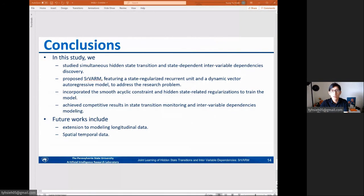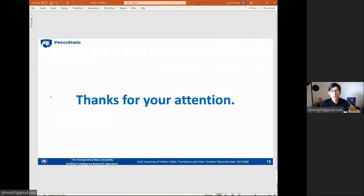To conclude today's presentation, we studied simultaneous hidden state transition and state-dependent intervariable discovery problem, and proposed the SRVARM approach, which features a state-regularized recurrent unit and a dynamic autoregressive model. Furthermore, we incorporated the smooth acyclic constraint and some hidden state-related regularizations to train the model. Finally, we achieved competitive results in terms of state transition monitoring and intervariable dependencies discovering performance. Some promising future works include an extension of the current framework to cope with longitudinal data, where observations are made in an irregular fashion, and an extension to consider spatial-temporal data. Thank you for your attention.